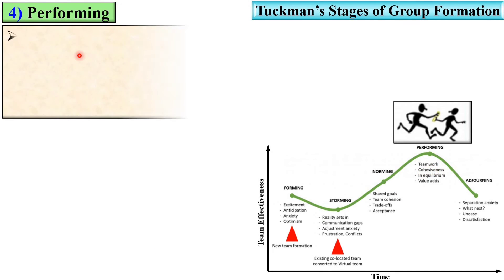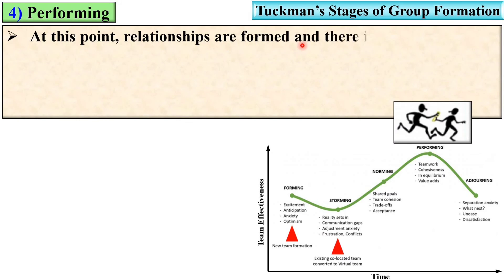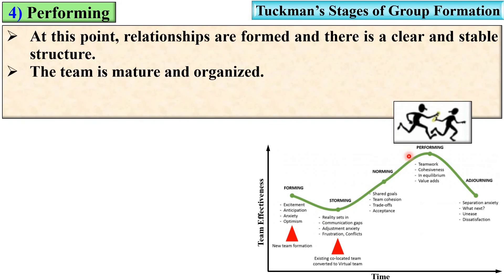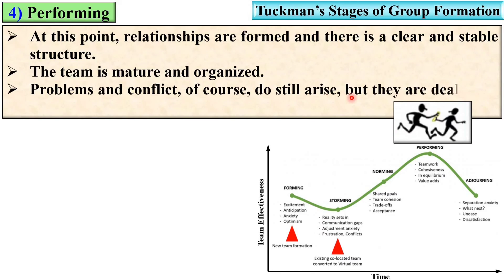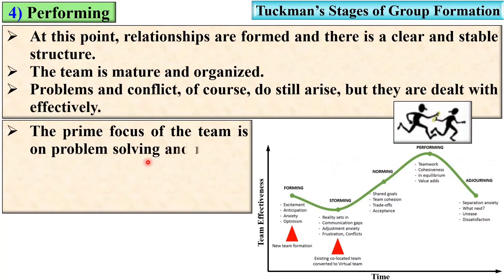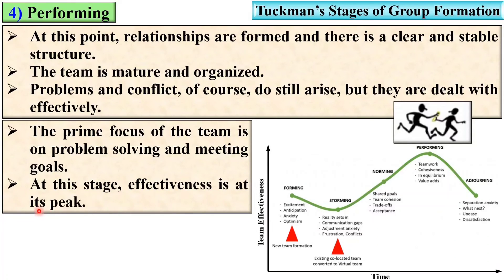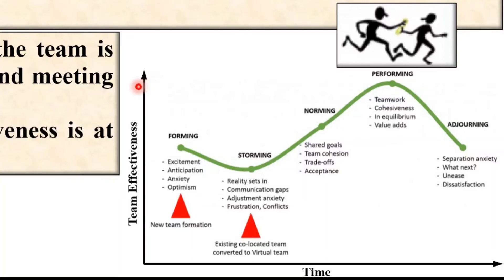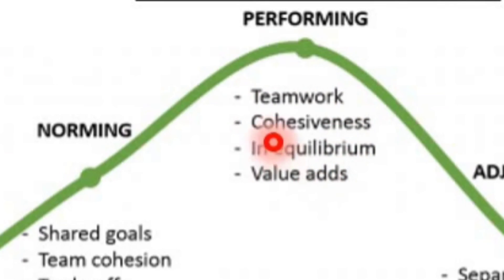The next stage is performing. At this point relationships are formed and there is a clear and stable structure. The team is mature and well organized. Problem solving and goal achievement are the focus of this stage, and team effectiveness is at its peak. Characteristics of the performing stage include teamwork, cohesiveness, equilibrium, and value adds.